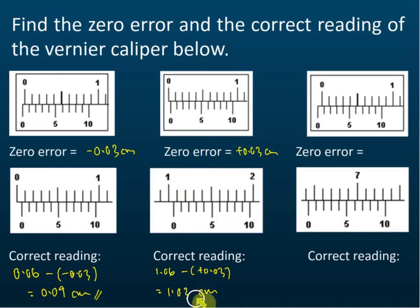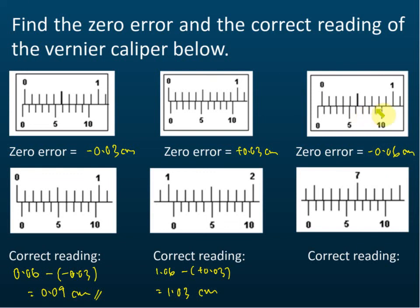Case number three — what's the zero error? Negative 0.06. It's a negative zero error, so we come from the back: one, two, three, four, five, six. The six coincides with the main scale, and the reading here is 6.43 cm.